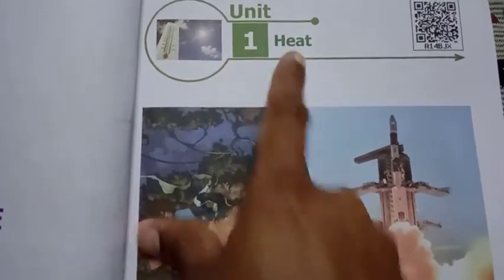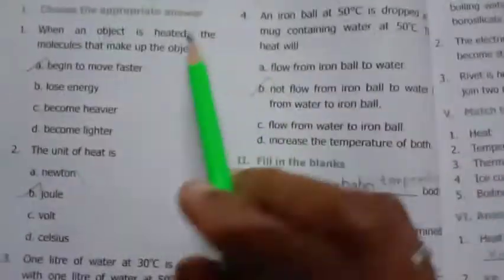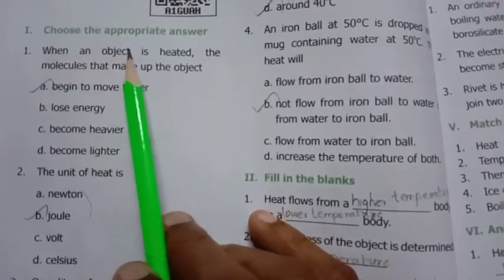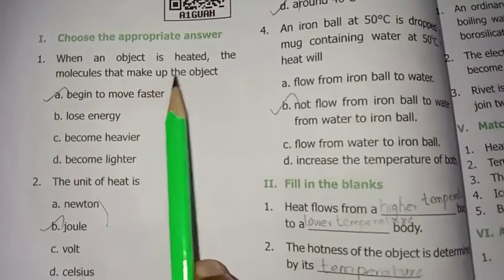Students, sixth standard unit 1 term 2, heat, question and answer book back exercise. First one, choose the correct answer: When an object is heated, the molecules that make up the object - option A, begin to move faster.